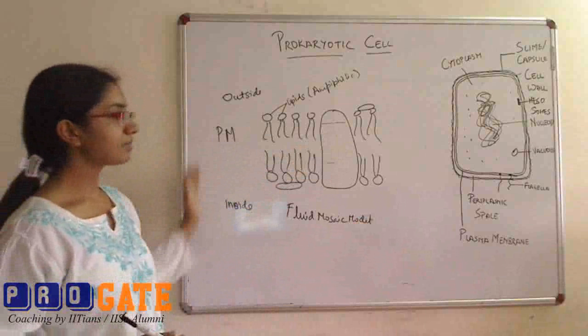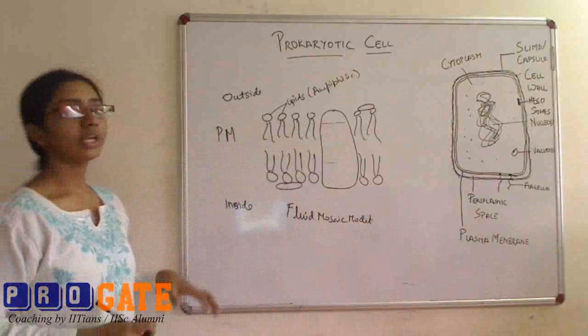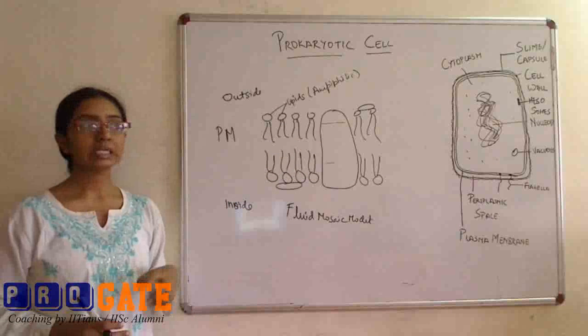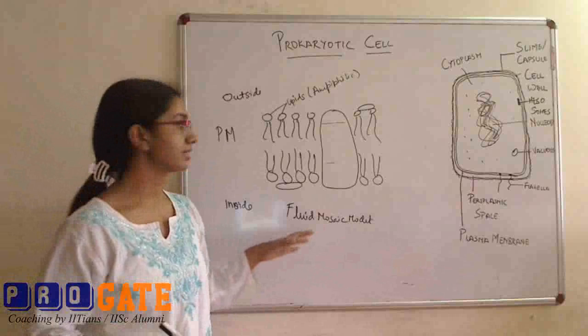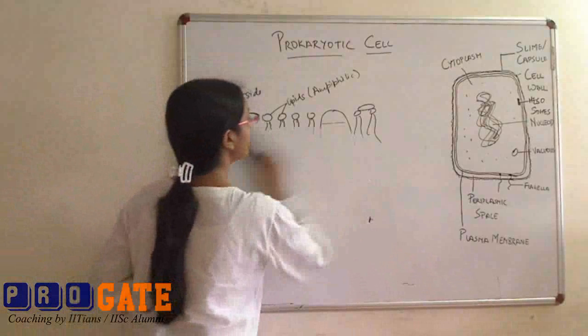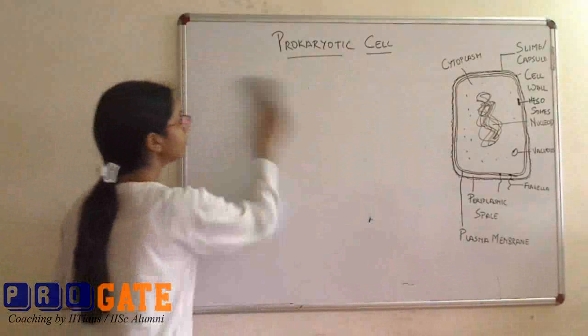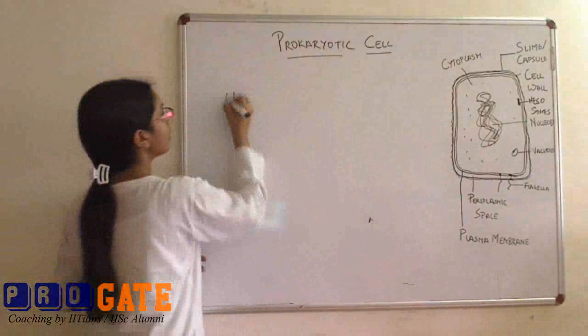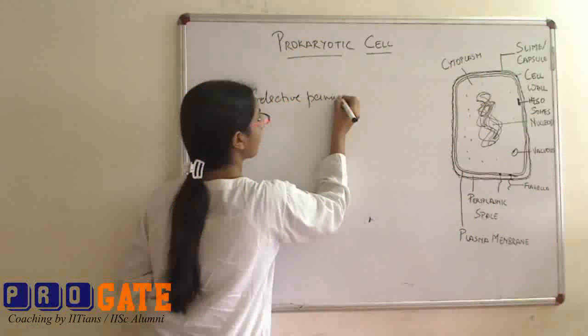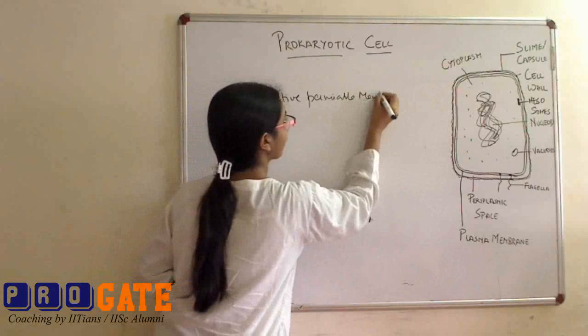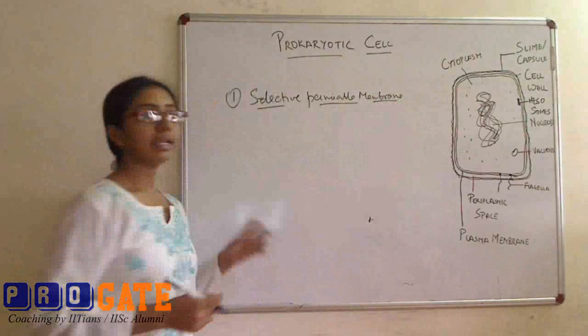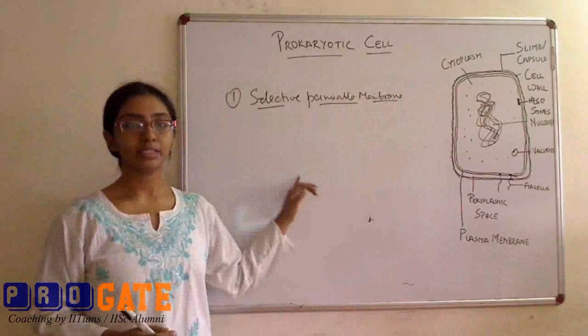In prokaryotic cells, the plasma membrane performs certain other functions which are not there in eukaryotic cells. When we move on to the functions of the plasma membrane, the first would obviously be providing a selectively permeable membrane barrier. It would only allow molecules in appropriate quantities that are needed by the cell to move in or out.